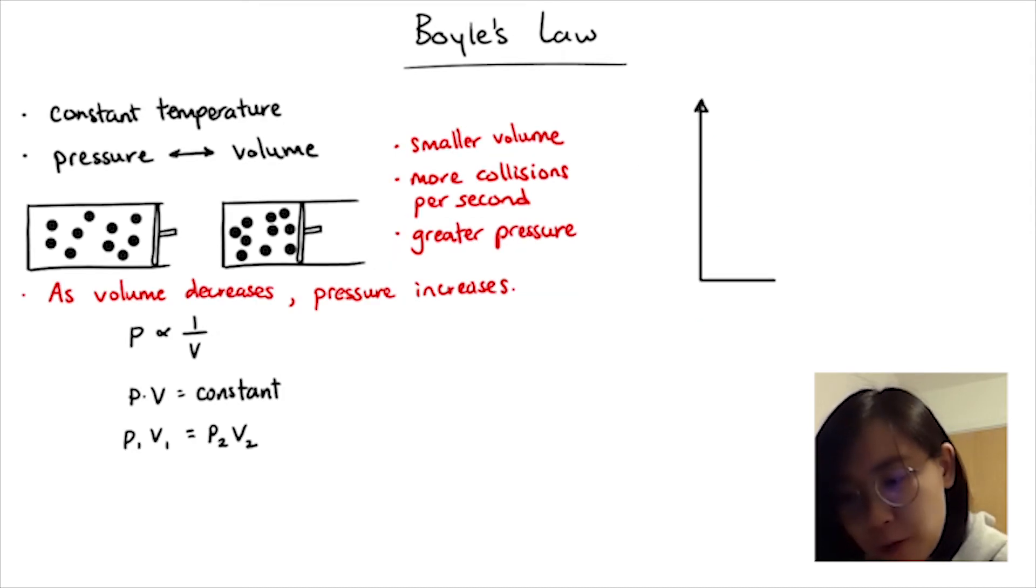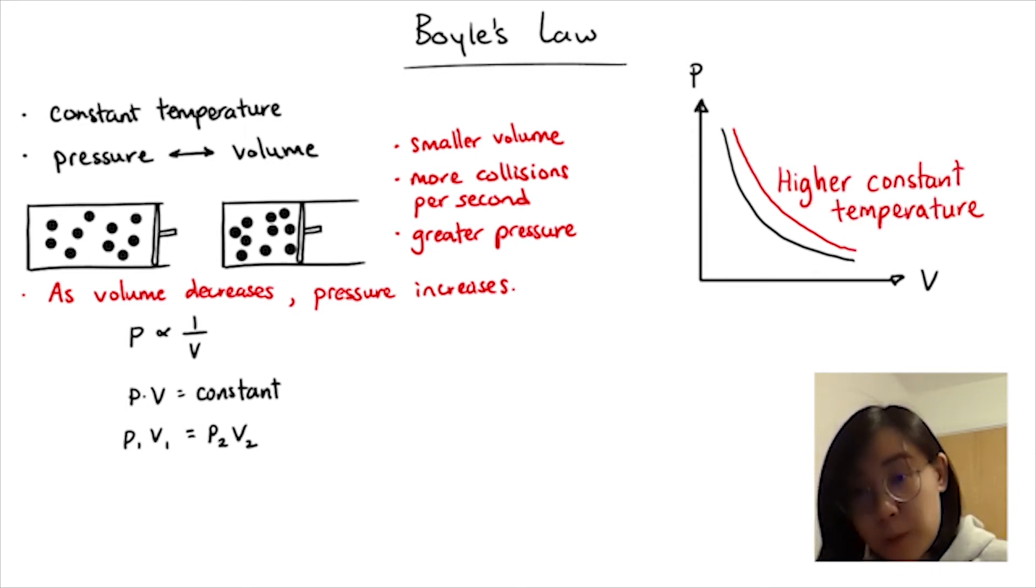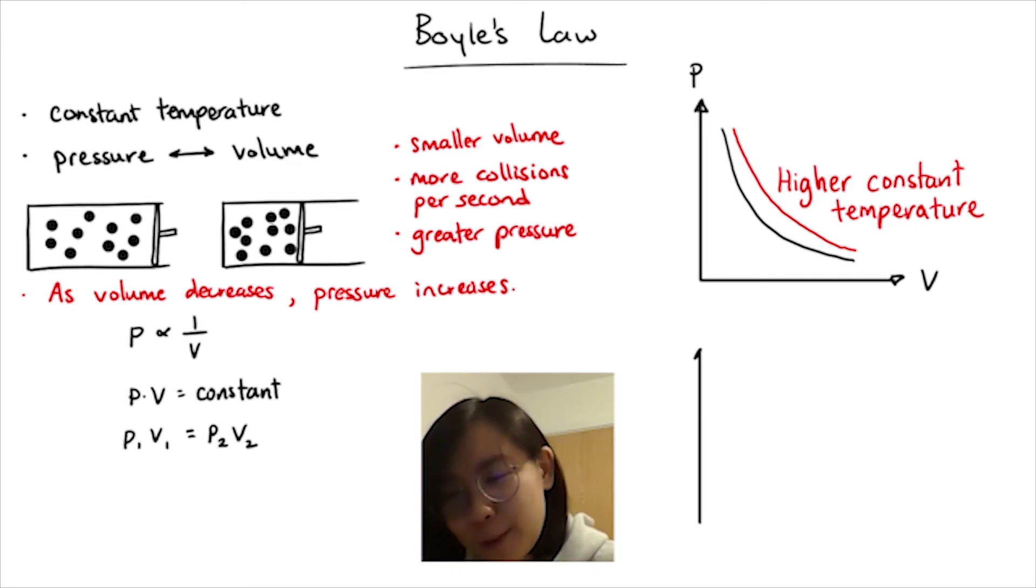Since pressure is inversely proportional to volume, we can sketch the graph like this. If the gas is at a higher constant temperature, we shift the curve up because the pressure is higher. But physicists tend to prefer linear graphs. So you might see a graph of pressure plotted against 1 over volume. Pressure is proportional to 1 over V, which gives a straight line through the origin.